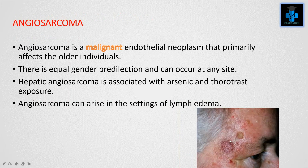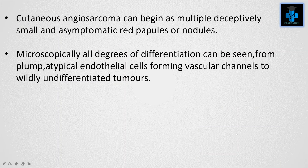Angiosarcoma is a malignant endothelial neoplasm that primarily affects older individuals, with equal gender predilection, and can occur at any site. Hepatic angiosarcoma is associated with arsenic and Thorotrast exposure. Angiosarcoma can also arise in the setting of lymphedema. Cutaneous angiosarcoma can begin as multiple deceptively small and asymptomatic red papules or nodules. Microscopically, all degrees of differentiation can be seen, from plump atypical endothelial cells forming vascular channels to wildly undifferentiated tumors.